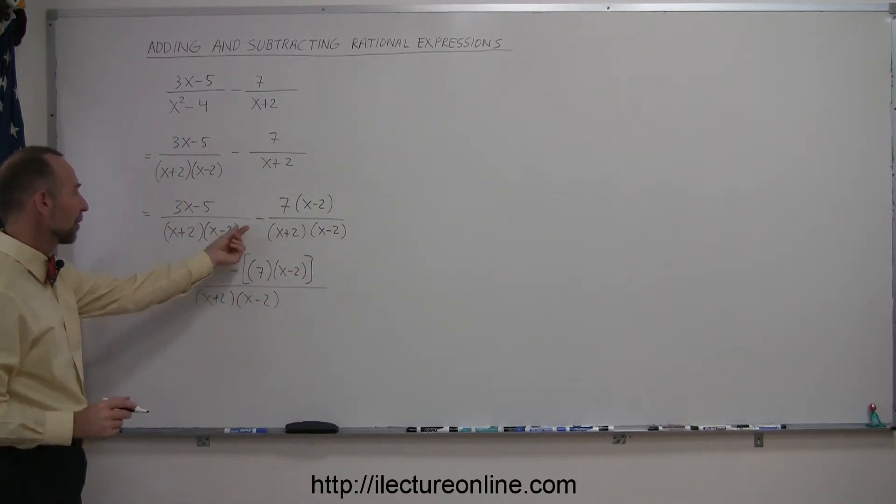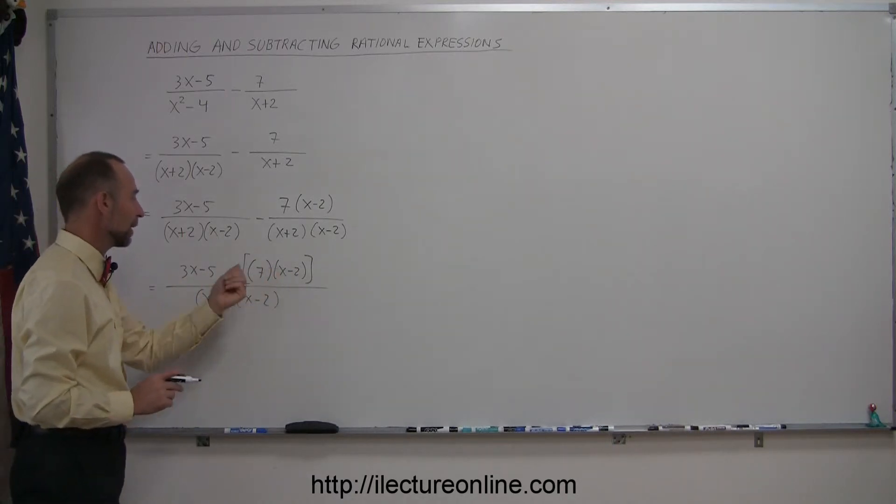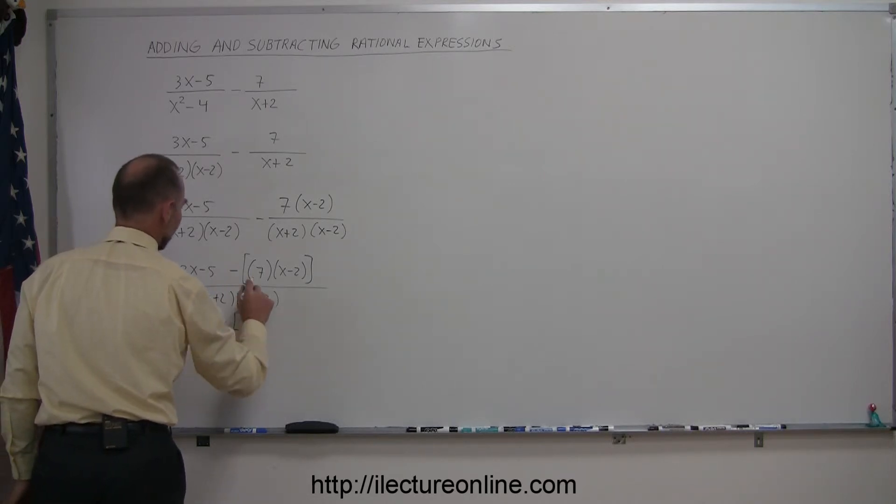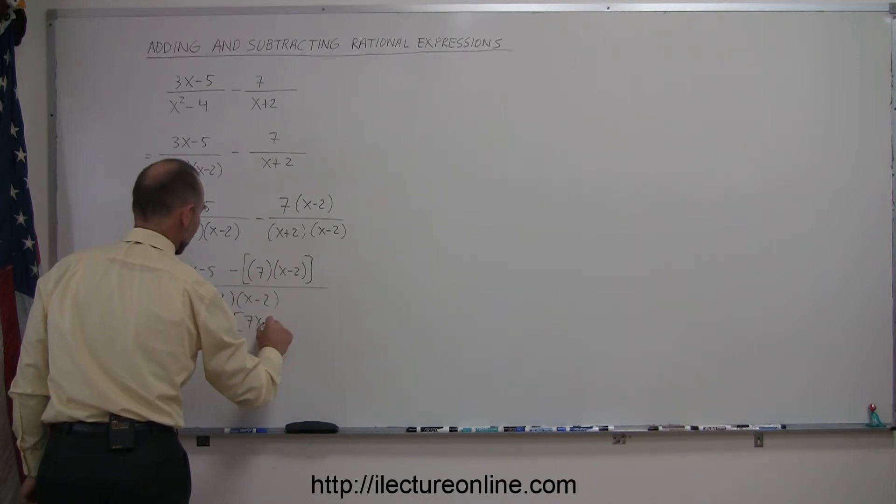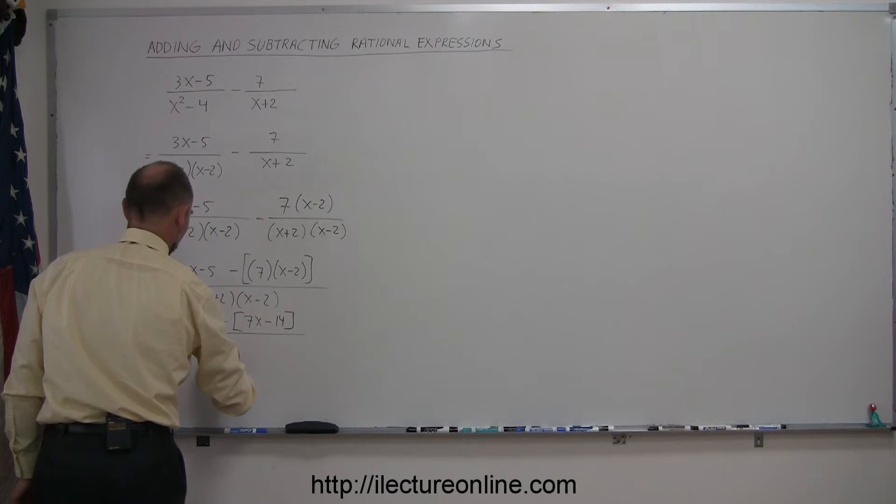I like to use brackets because I don't want to make a mistake using this negative sign. I'm first going to multiply out what's inside the bracket, so this equals 3x minus 5 minus—7 times x is 7x, 7 times minus 2 is minus 14—all divided by x plus 2 times x minus 2.